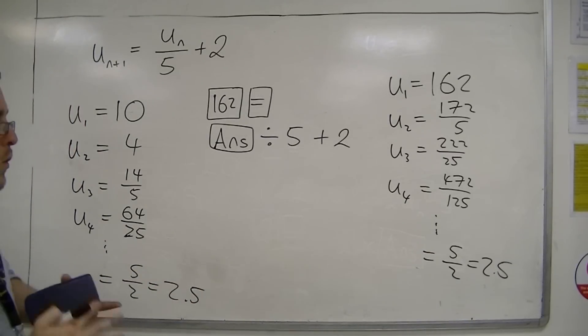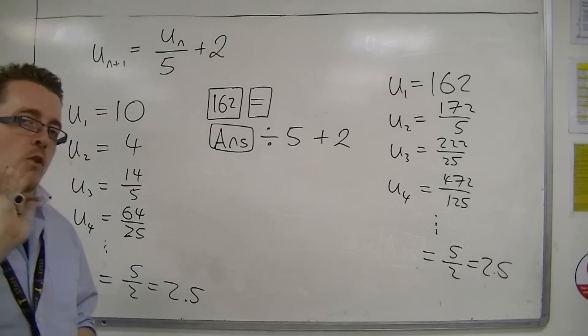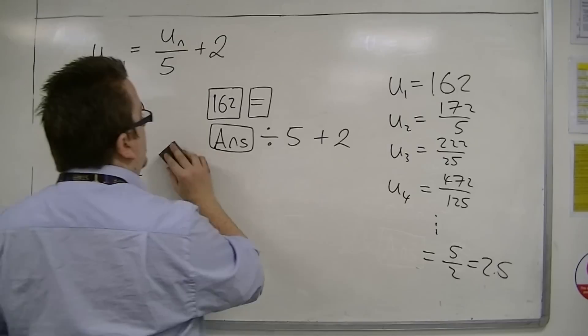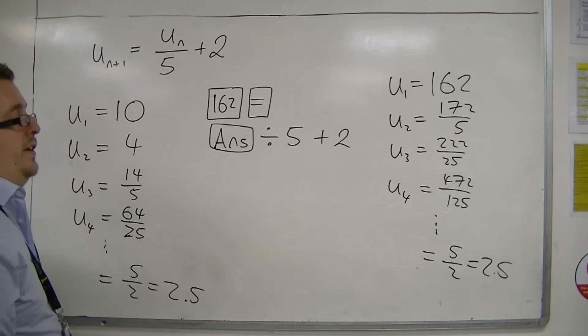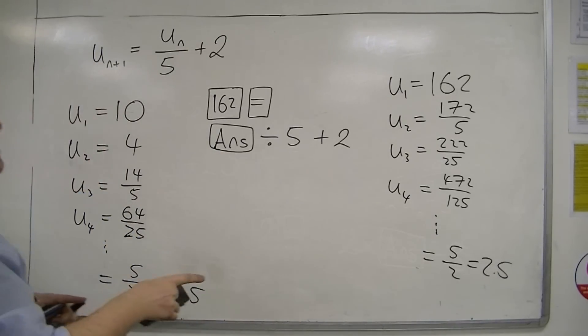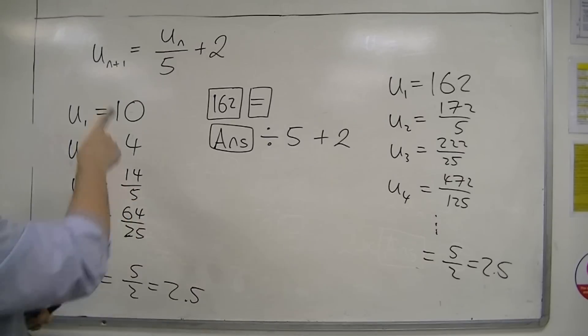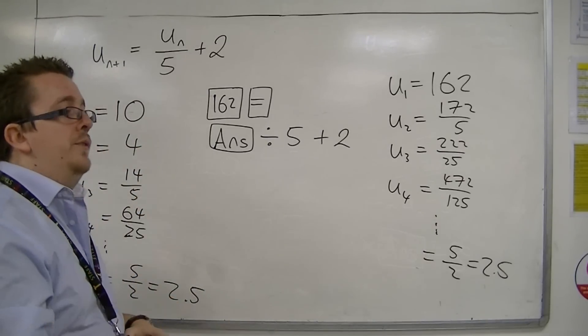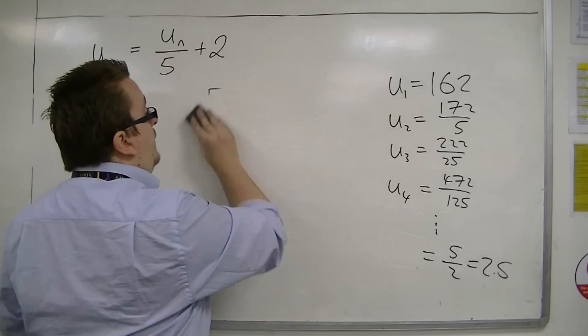There must be a way to determine what that value is going to be, and there is. We've already met it for generating the constant sequence. If you put in 5 halves as your starting value, you're going to get 5 halves repeatedly as your sequence.